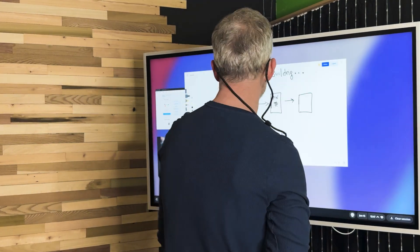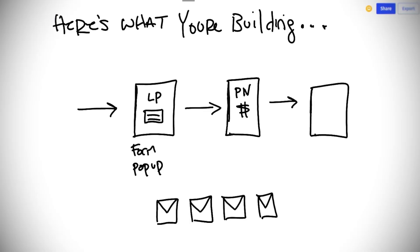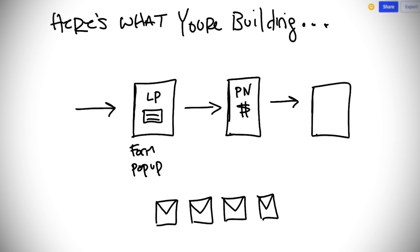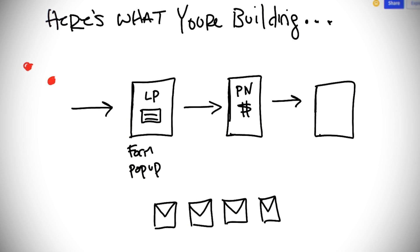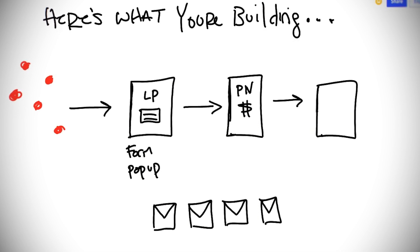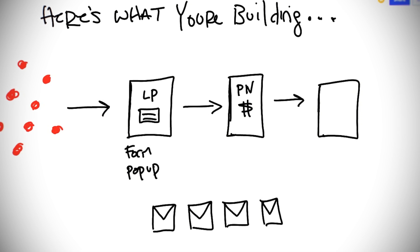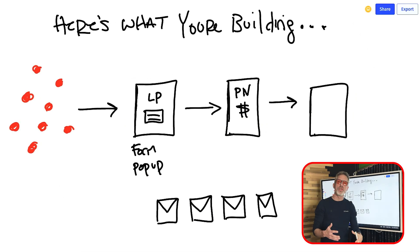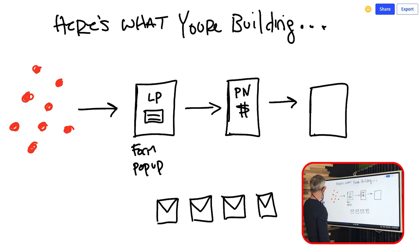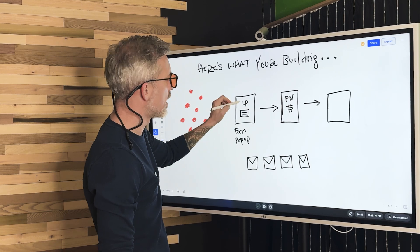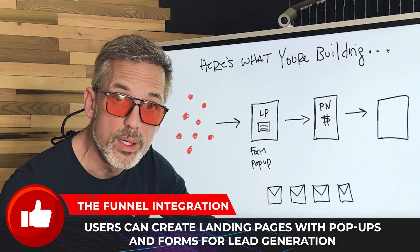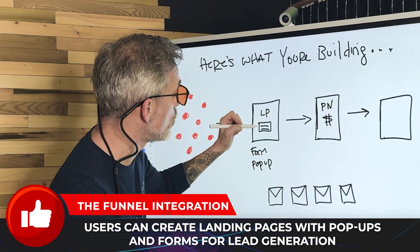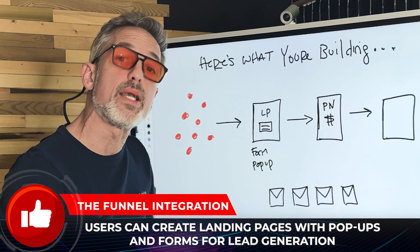Let me show you what all that means with this image. This is essentially what you're building with GetResponse. As content creators, we're making videos and in those videos you have calls to action — you're telling your viewers, 'If you like this video, go get on my email list.' You're leading them to a landing page. On that landing page there'll be a form or a pop-up where the person puts their name and email and becomes a contact.